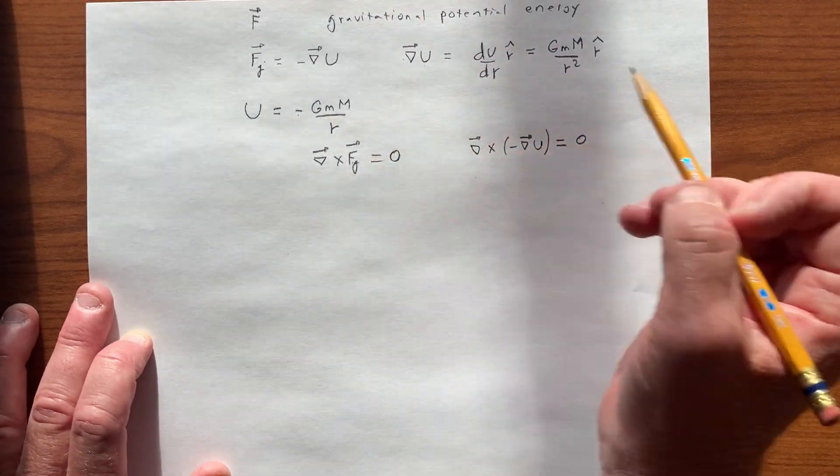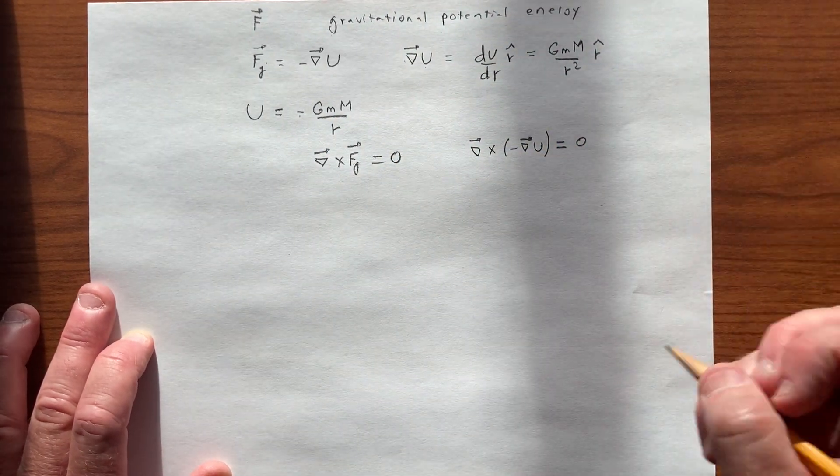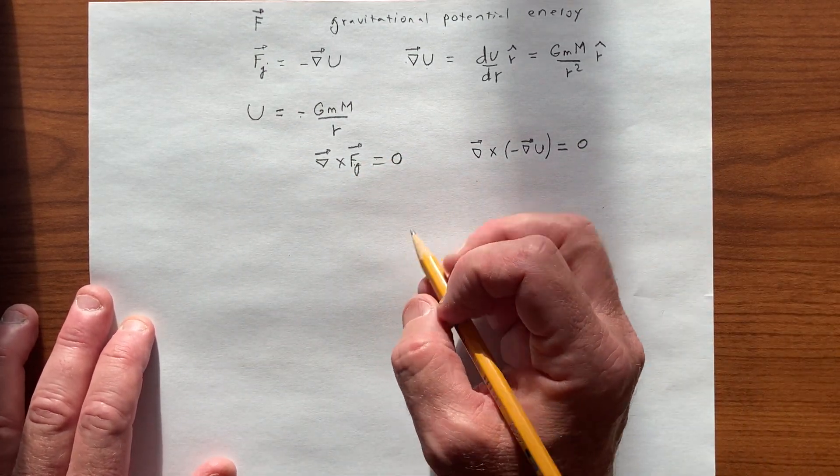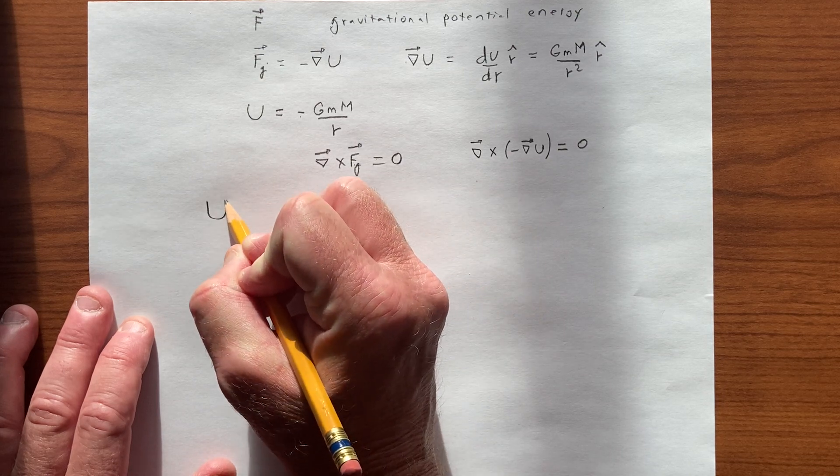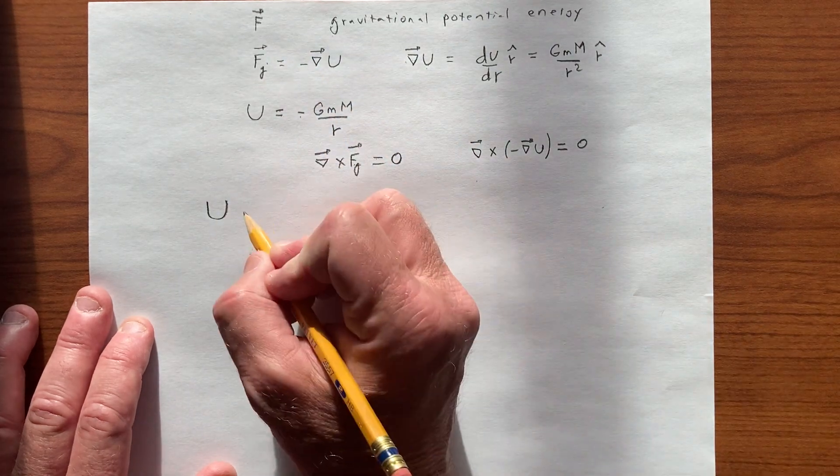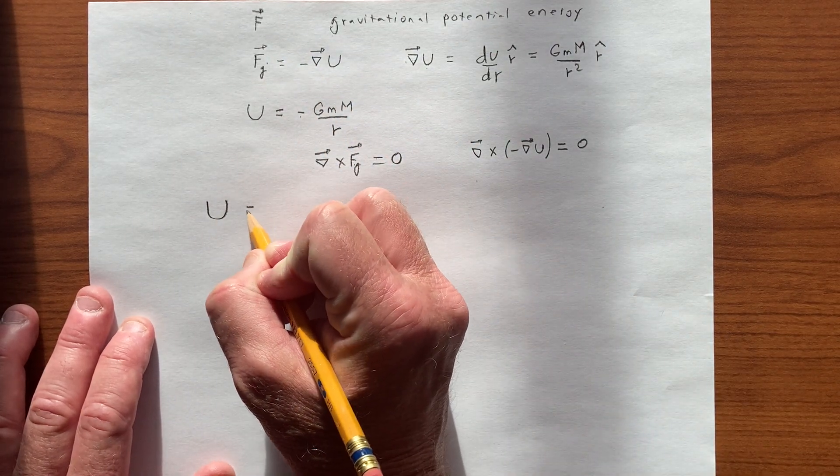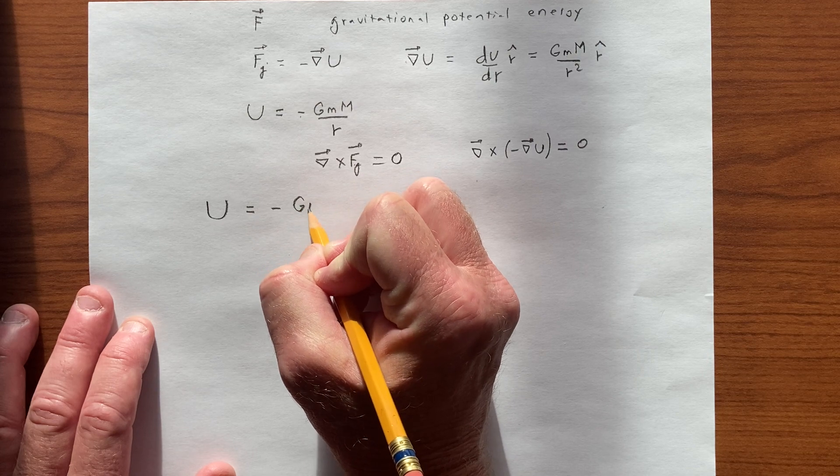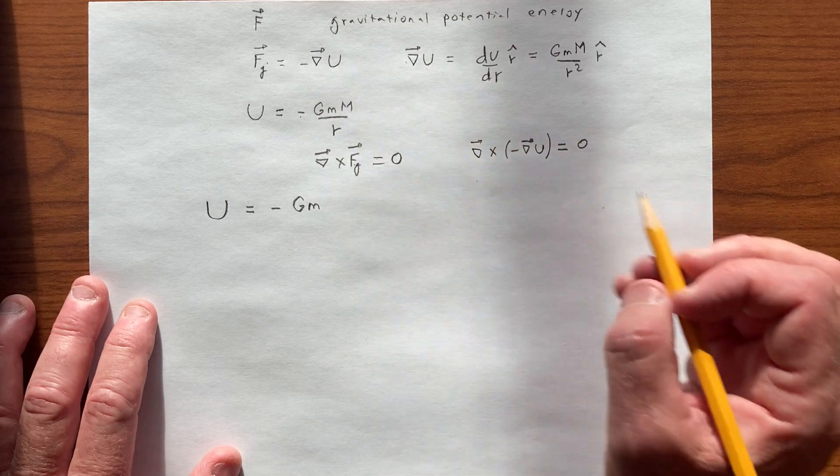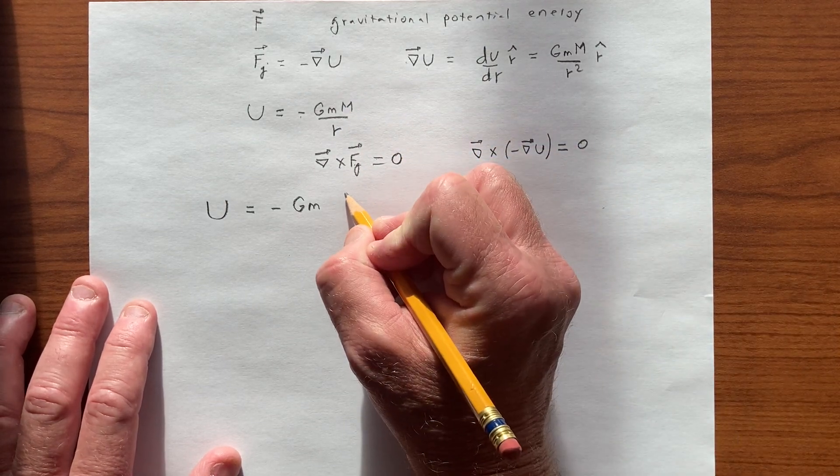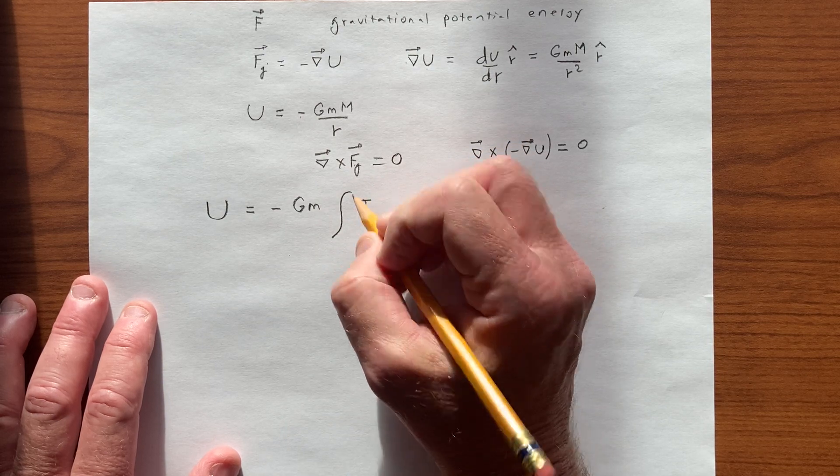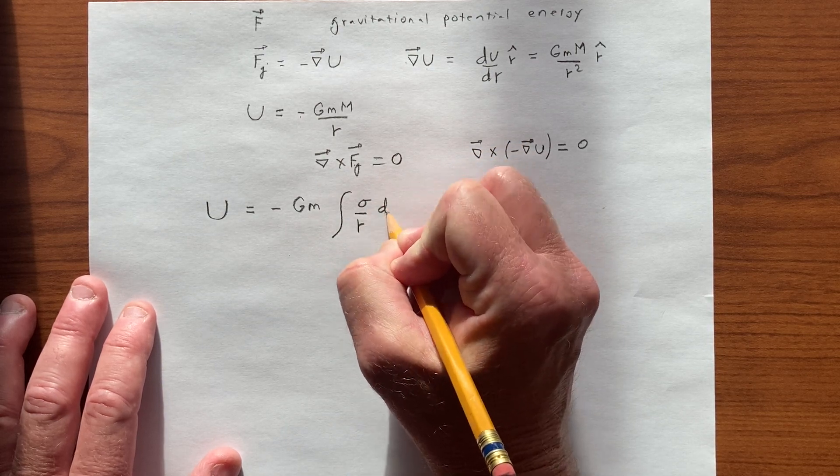So this function doesn't have a curl, and so let's think about solving the problem that we solved before, by going through the potential energy. So if we start with the potential energy, and then we'll take, we'll do this operation to get the force, it's much more straightforward. We're not dealing with vectors, so we have minus G times M, then we have this object M, we have to integrate over the surface. In this case, we have a surface density sigma, we divide by R, and we integrate over a surface.